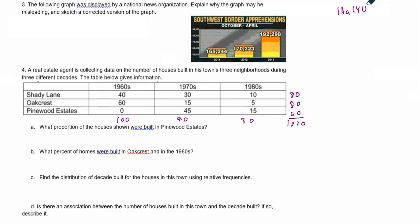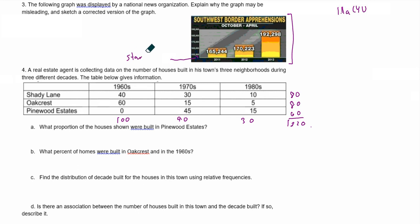Without further ado, let's look at the following graph. A national news organization explains why the graph may be misleading, and we need to sketch a corrective version of the graph. We have southwest border apprehensions, and there appears to be a huge differential between each one of these values from 2011, 2012, and 2013. One key thing when dealing with a bar graph is that it needs to have a scale that starts at zero.